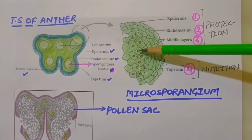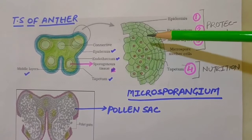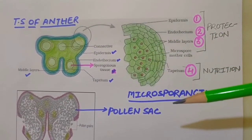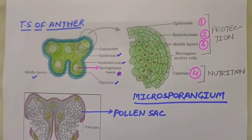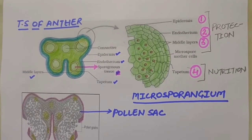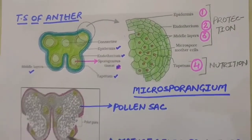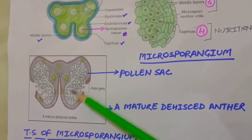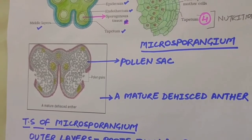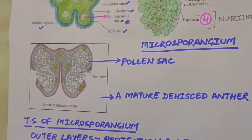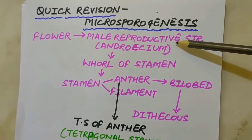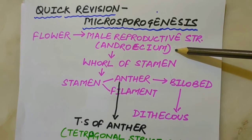Inside each microsporangium, several thousands of microspores or pollen grains are formed that are released with the dehiscence of the anther. Dehiscence releases pollen grains into the air, and then they go on to pollination. These pollen grains represent the male gametophyte.